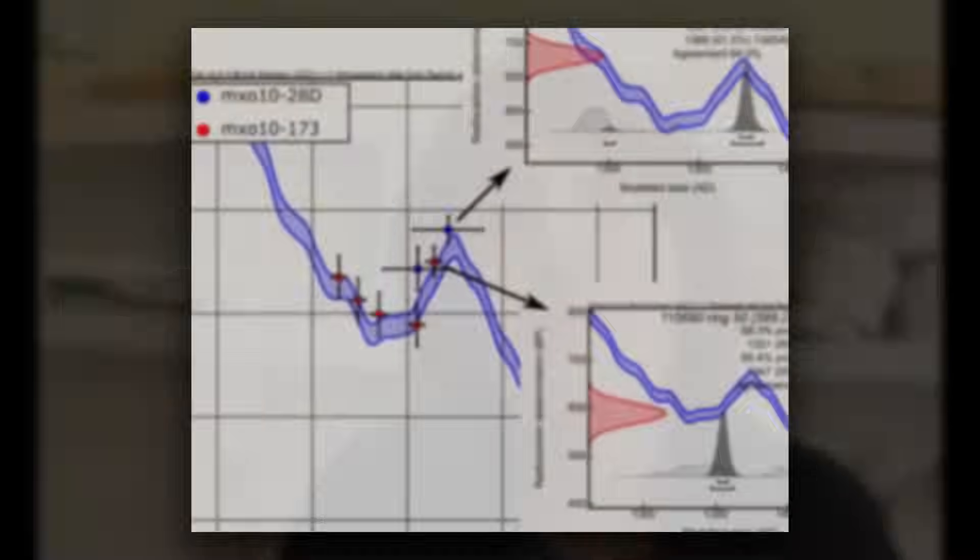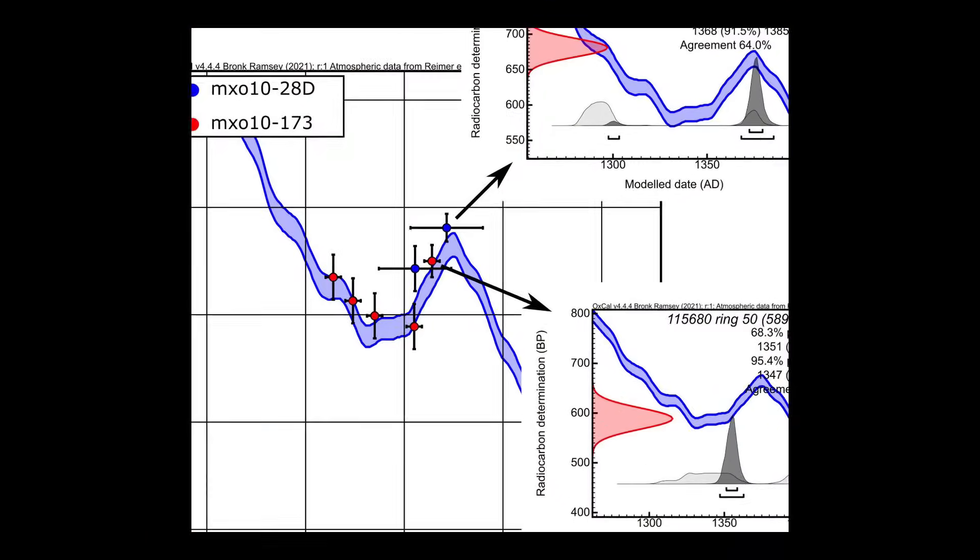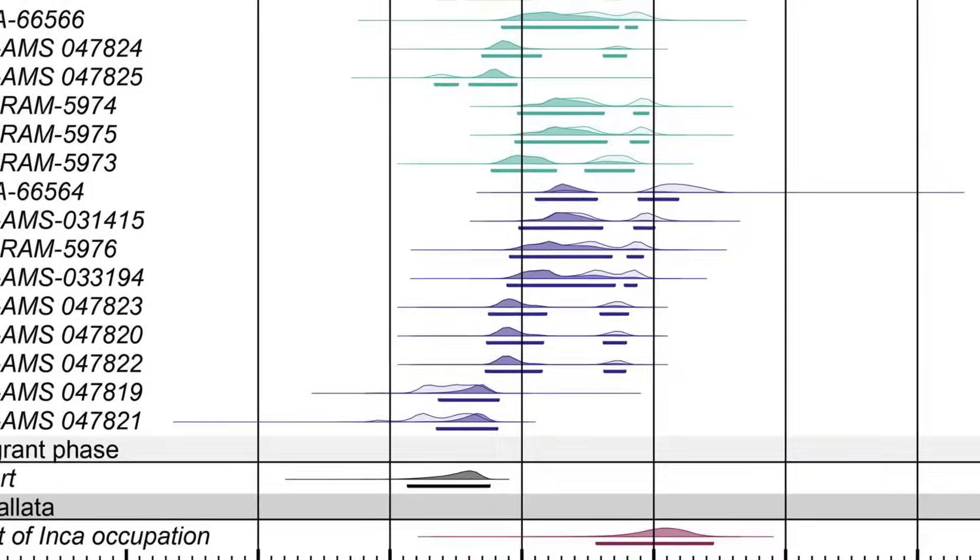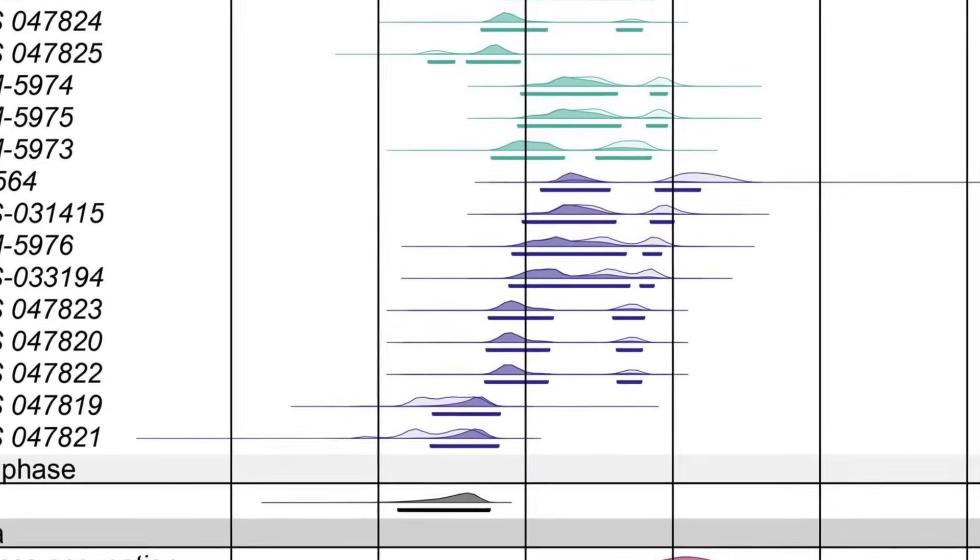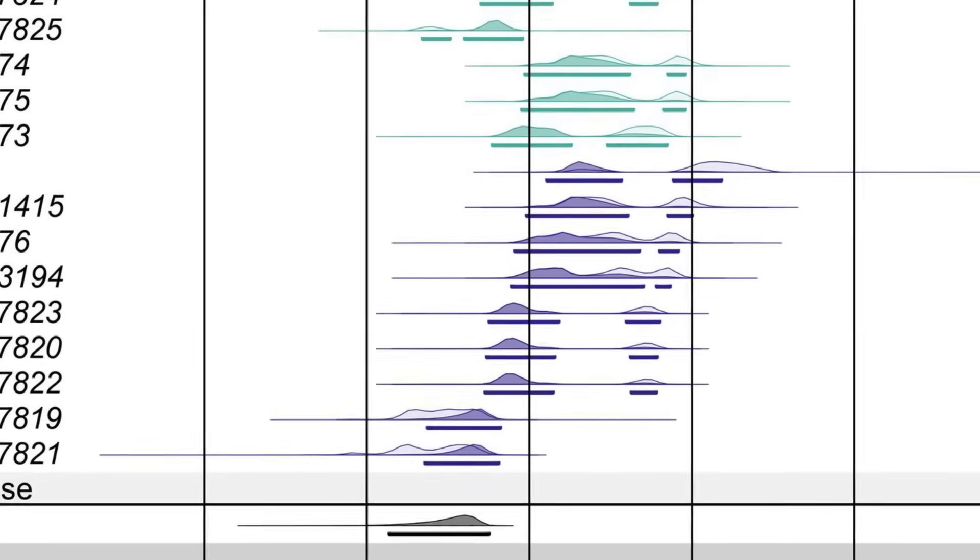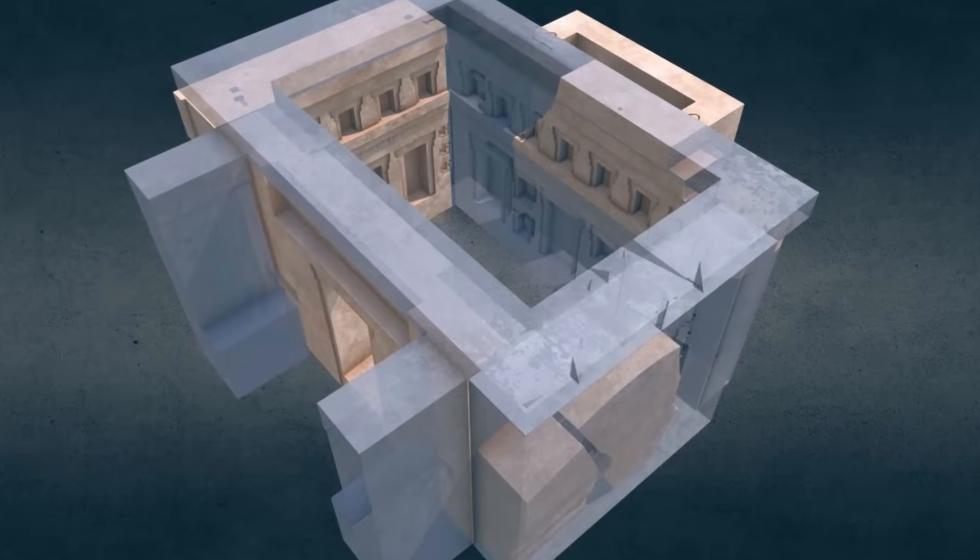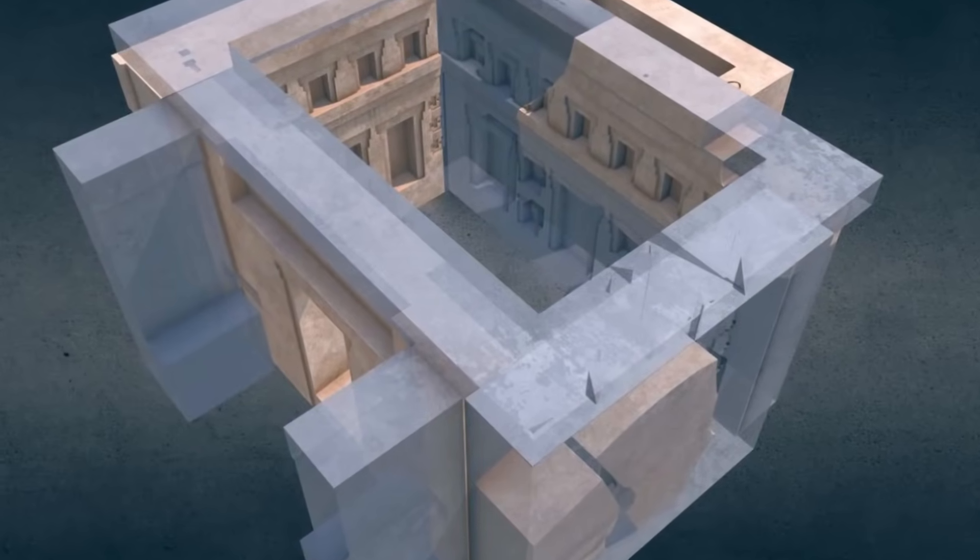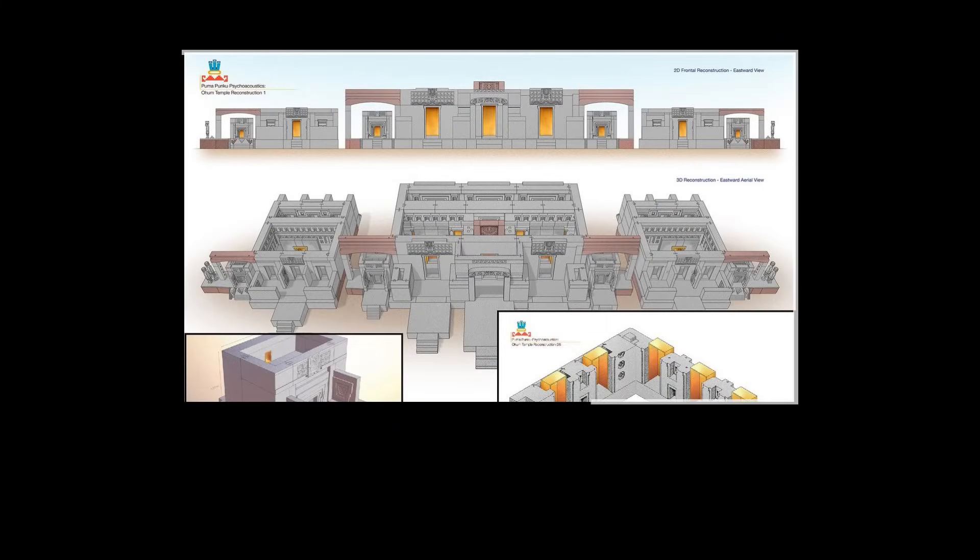These samples, analyzed in labs across the globe, provide a statistical backbone for the site's chronology. As Bayesian modelling techniques have matured, archaeologists have fed hundreds of Tiwanaku area radiocarbon dates into ever more refined timelines. The result is a picture of relentless building activity across the first millennium AD, with Puma Punku rising as part of Tiwanaku's earliest monumental surge.